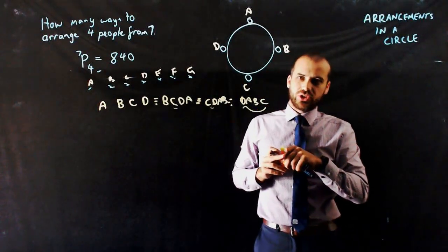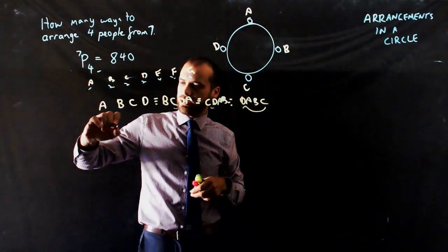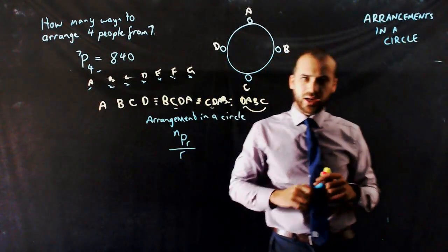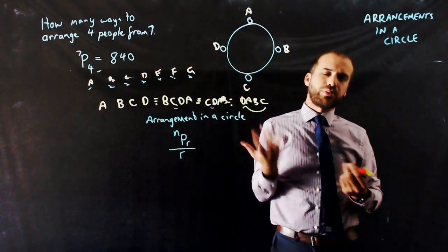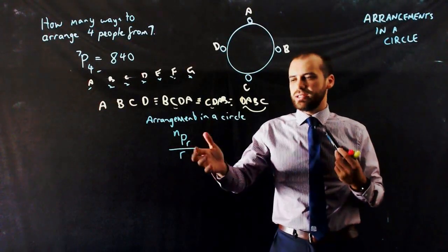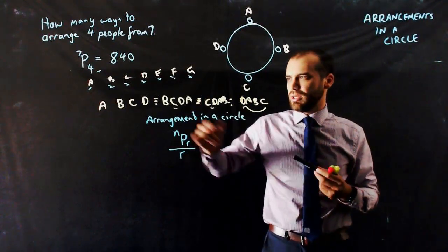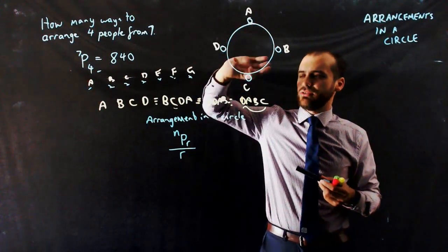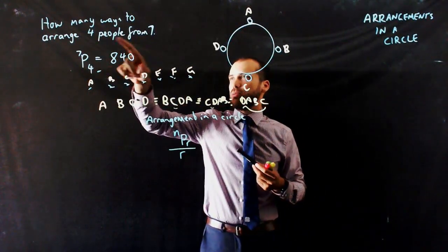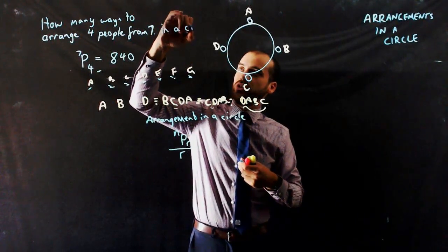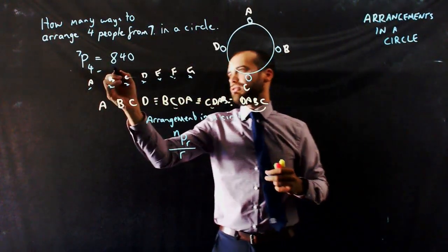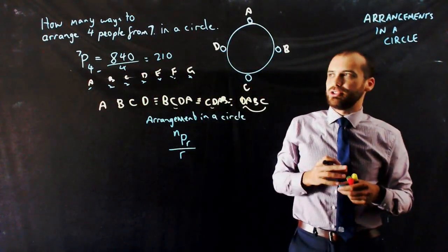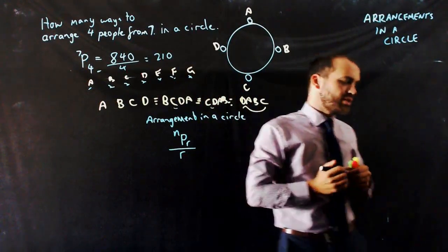If you need to arrange something in a circle, the formula for that is going to be N permute R over R, where R is the number of people that you're seating in that circle. The reason for that is because you rotate it through R times — in this case, four times. So how many ways to arrange four people from seven in a circle? The answer is 840 divided by 4, which is 210. That's drastically reduced just by putting them in a circle. That's arrangements in a circle.